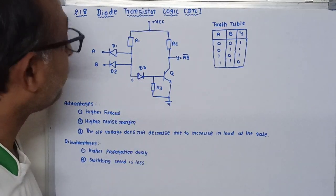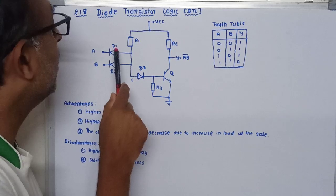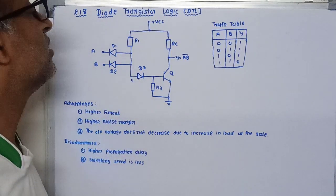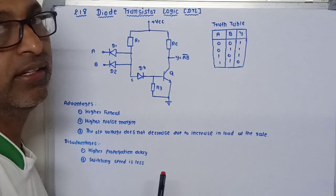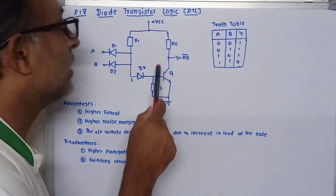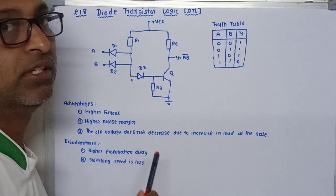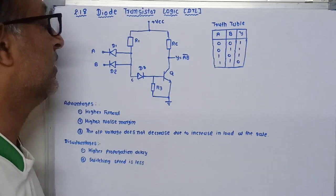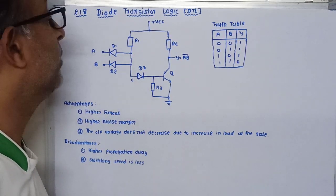The diode D1, D2, and R1 make an AND gate, and the inversion can be done by transistor Q, which makes a NAND gate. Now let me see how it will work.